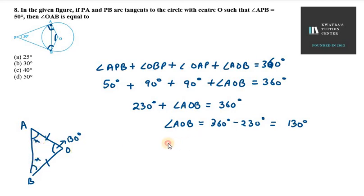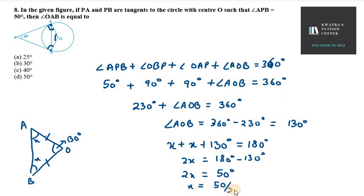Now we can apply the angle sum property of a triangle. So x plus x plus 130 equals 180 degrees. It will be 2x equals 180 minus 130 degrees. 180 minus 130 is 50 degrees. So your x value is 50 over 2, which is 25 degrees.